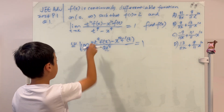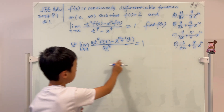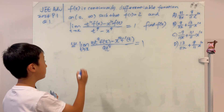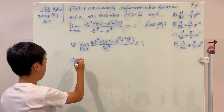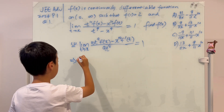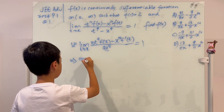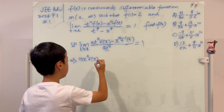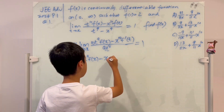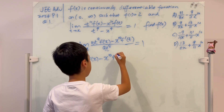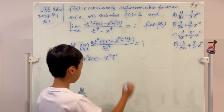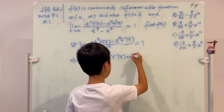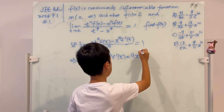Now let's change all the t's to x and multiply across to the right-hand side. So it becomes: 10x^9 · f(x) minus x^10 · f'(x) equals 9x^8.